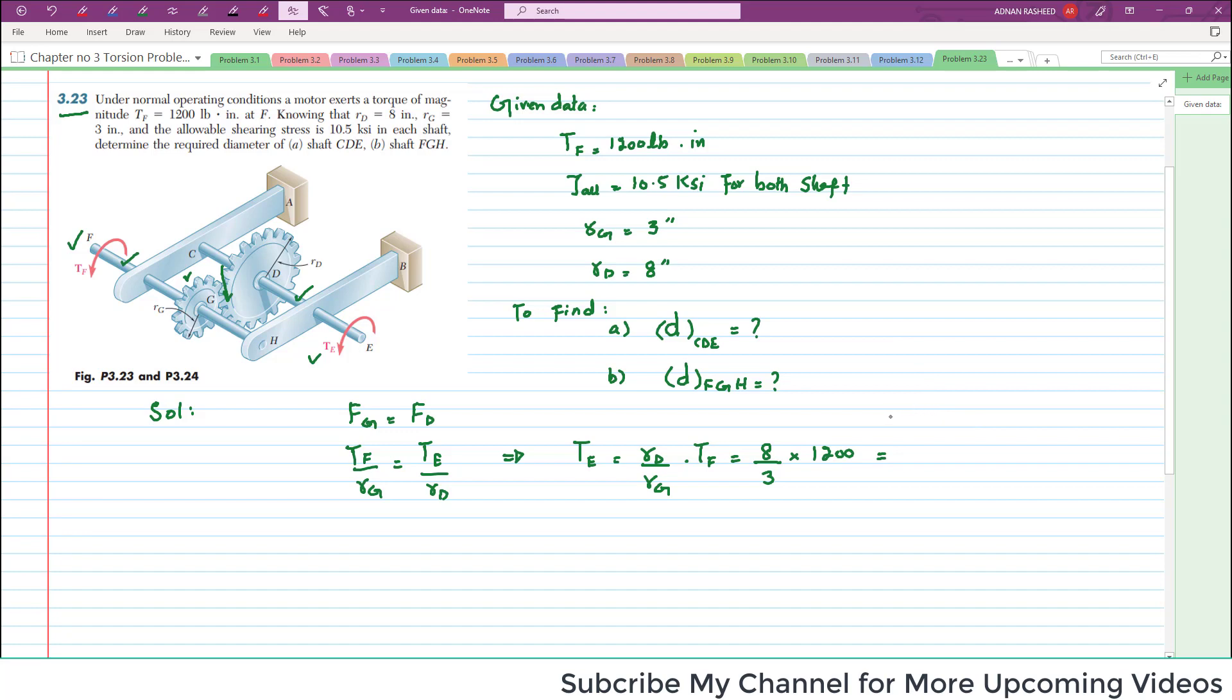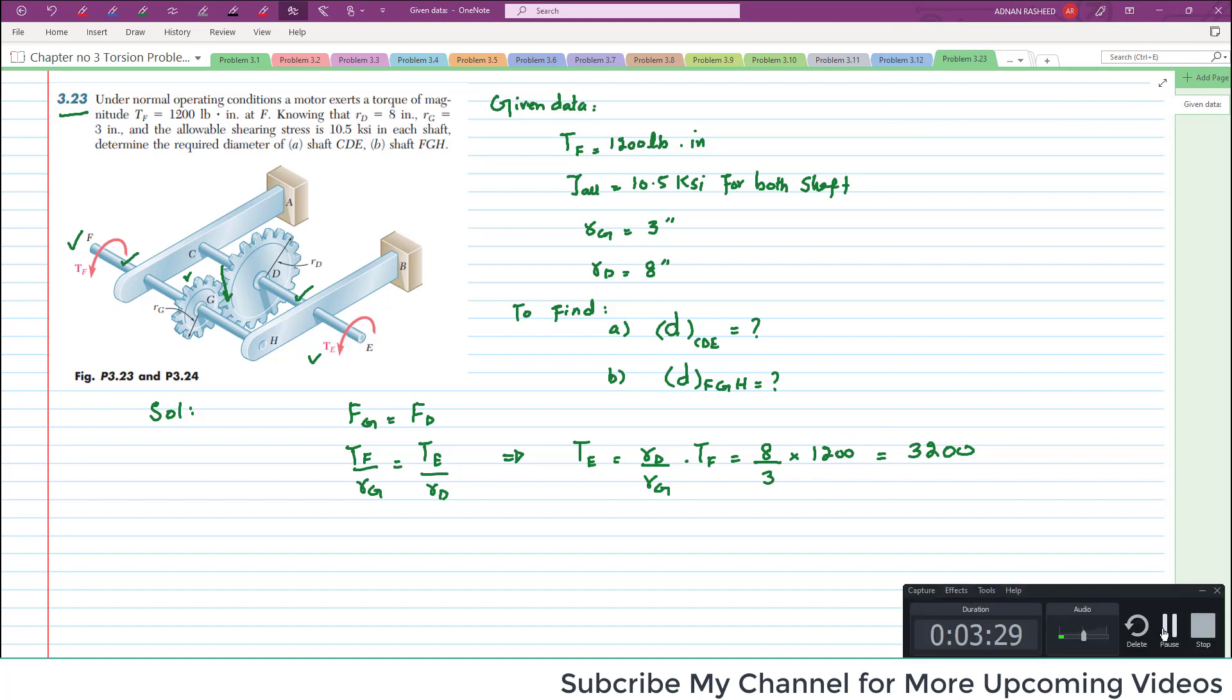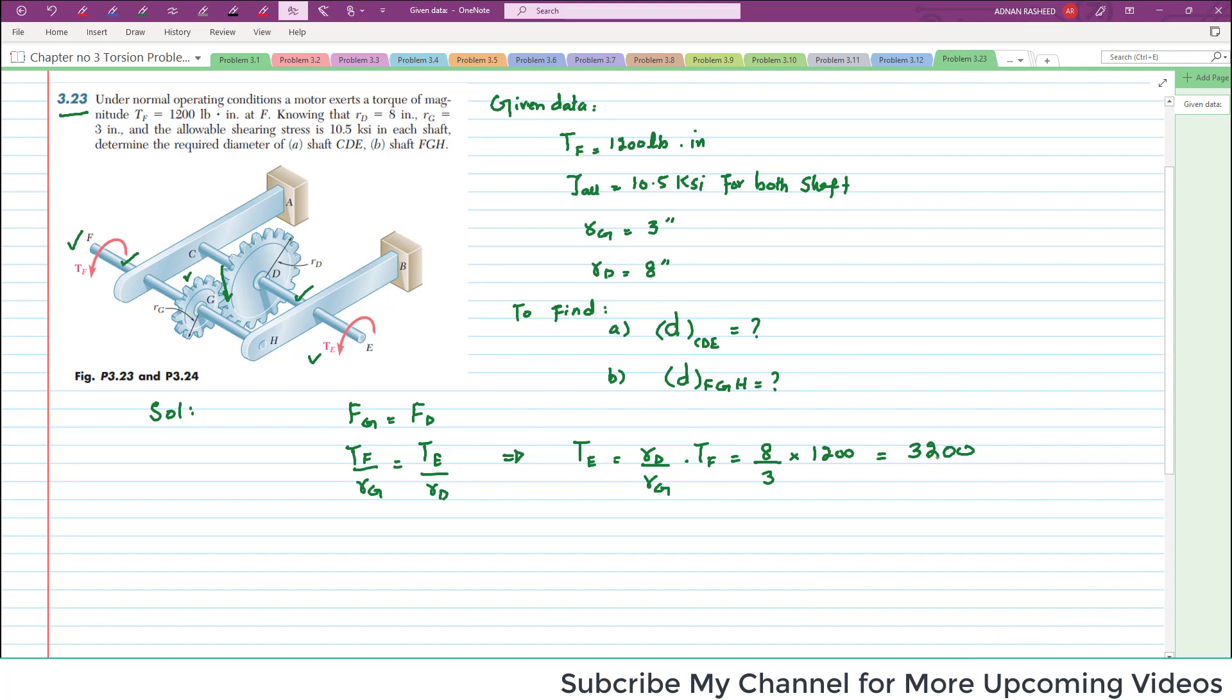When you calculate it, this value comes out to be 3200. So this is 3200 pound-inch. This is TE.